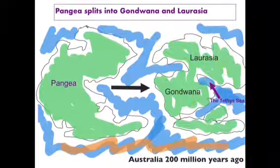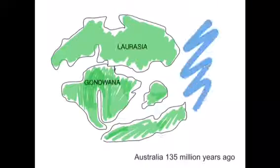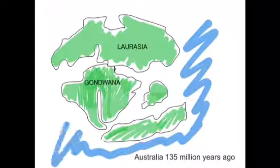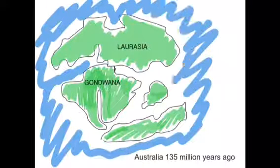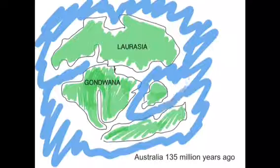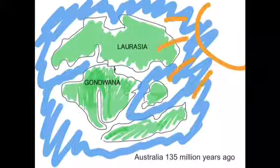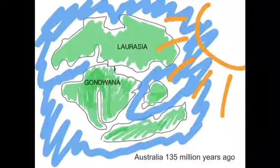140 million years ago, Australia became a warm and moist place again, as previously it was hot and dry. 135 million years ago, Gondwana began to split up.